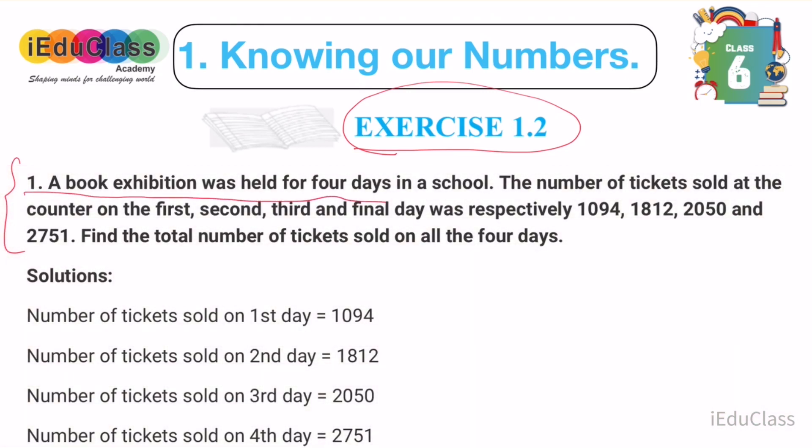First question: A book exhibition was held for four days in a school. The number of tickets sold at the counter on the first, second, third, and final day was respectively 1094, 1812, 2050, and 2751. Find the total number of tickets sold on all four days.